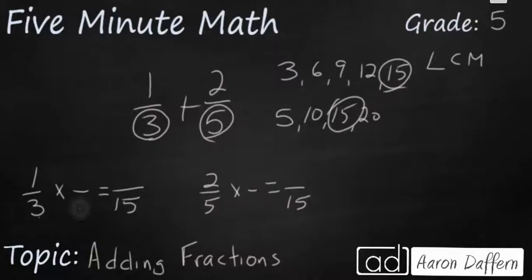When I want to change my one-third into fifteenths, I need to think three times what equals fifteen. Remember, you cannot add straight across when dealing with fractions if the denominators are different. Multiplying fractions is much simpler—you can multiply straight across and it doesn't matter what the denominators are. Three times blank equals fifteen.